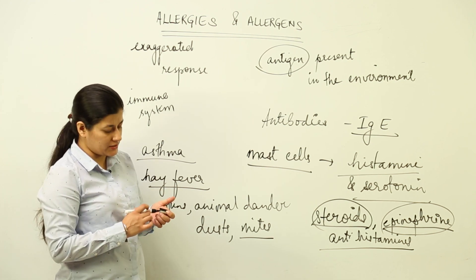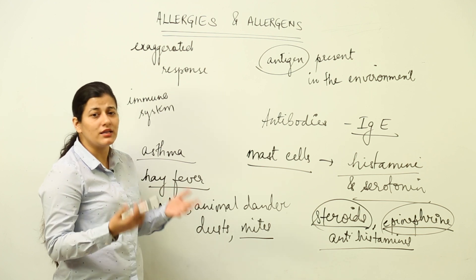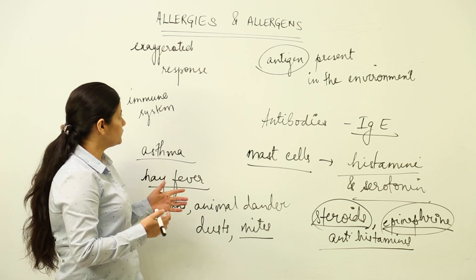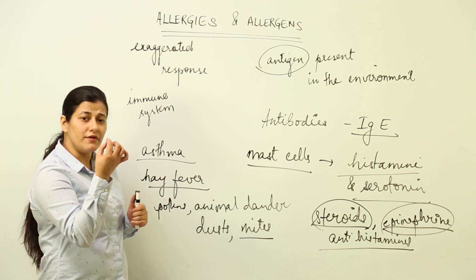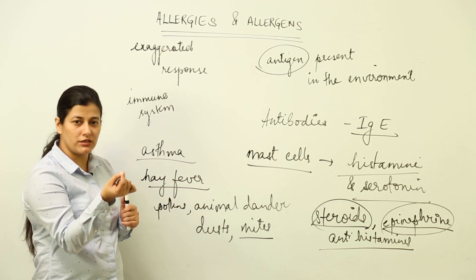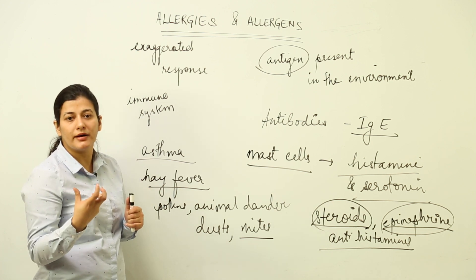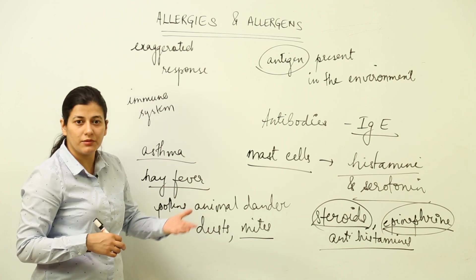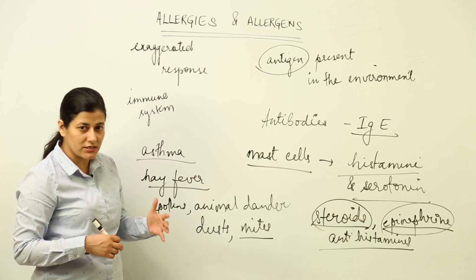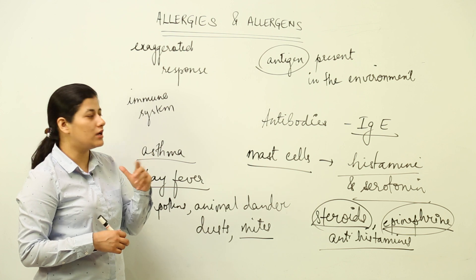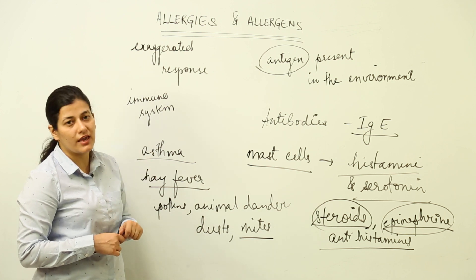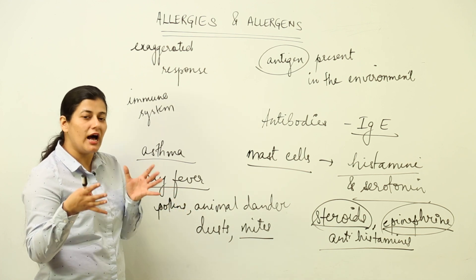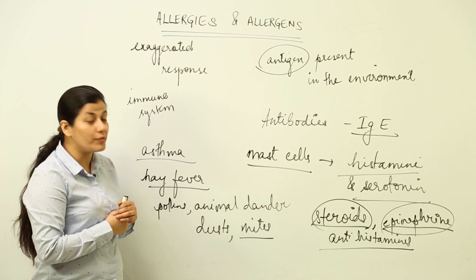Antihistamines can be used to control the symptoms which the allergens have produced in the body. How do we identify if a person is suffering from an allergy? One way is that symptoms are going to show. Otherwise, if you have to find out if the person is suffering from a specific allergy, you provide a small amount of the allergen and see what response it brings about in the body — what that particular antigen has caused and what type of response has occurred.